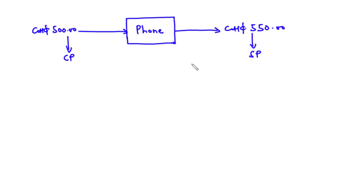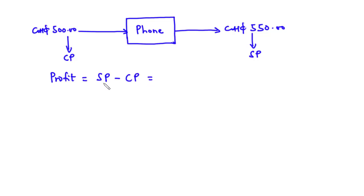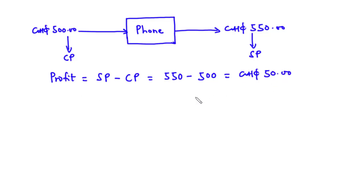Since the amount you sold the phone is higher than the amount you used in buying the phone, we say that you made a profit. The profit is basically the selling price minus the cost price. We have the selling price to be 550 Ghana cedis and the cost price to be 500 Ghana cedis, so the profit is 50 Ghana cedis.